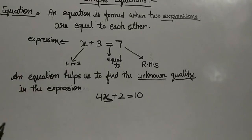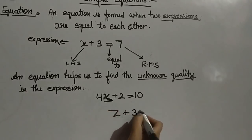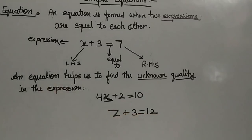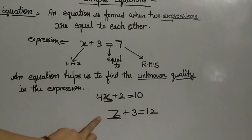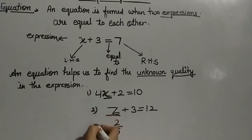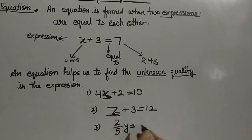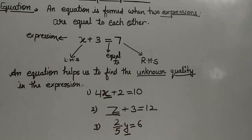This equation will help us to find out the value of X. One more example: Z plus 3 equal to 12. You all know what is 3 and 12, so what is unknown here? Z. This equation will help us find the value of Z. Similarly, if I write 2 upon 5 times Y equal to 6, then 2 upon 5 and 6 are known, so this equation will help us find the unknown value of Y.